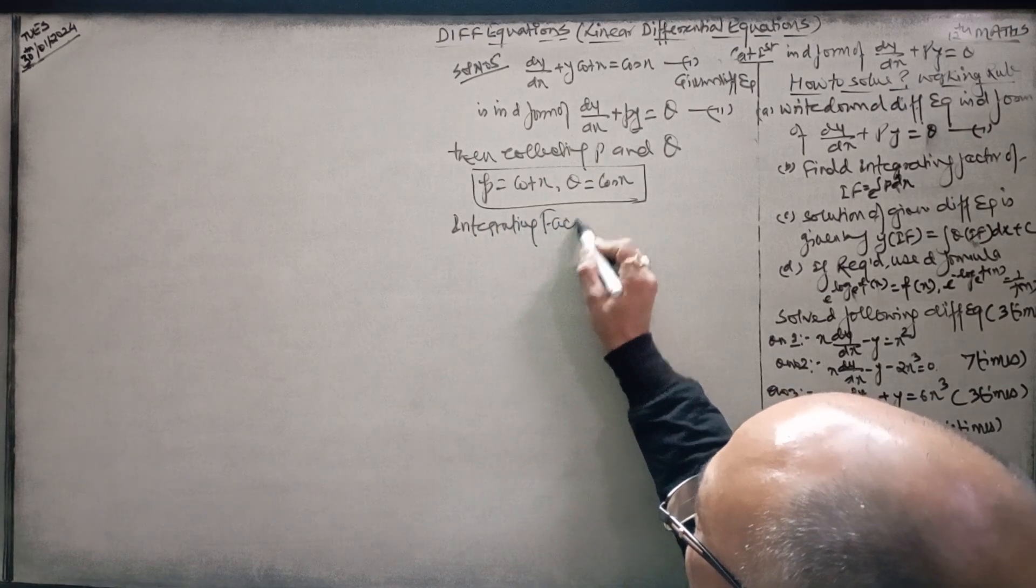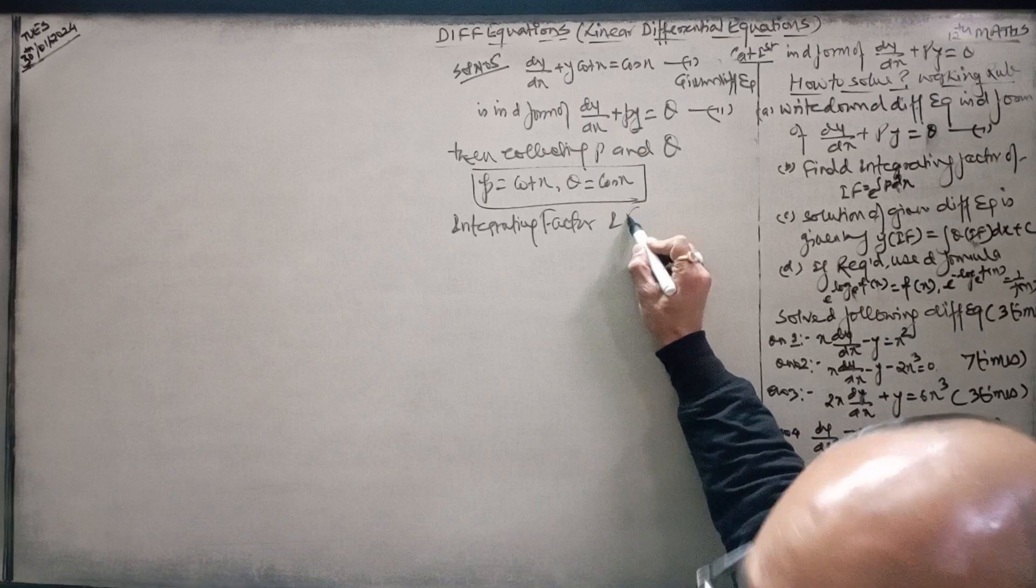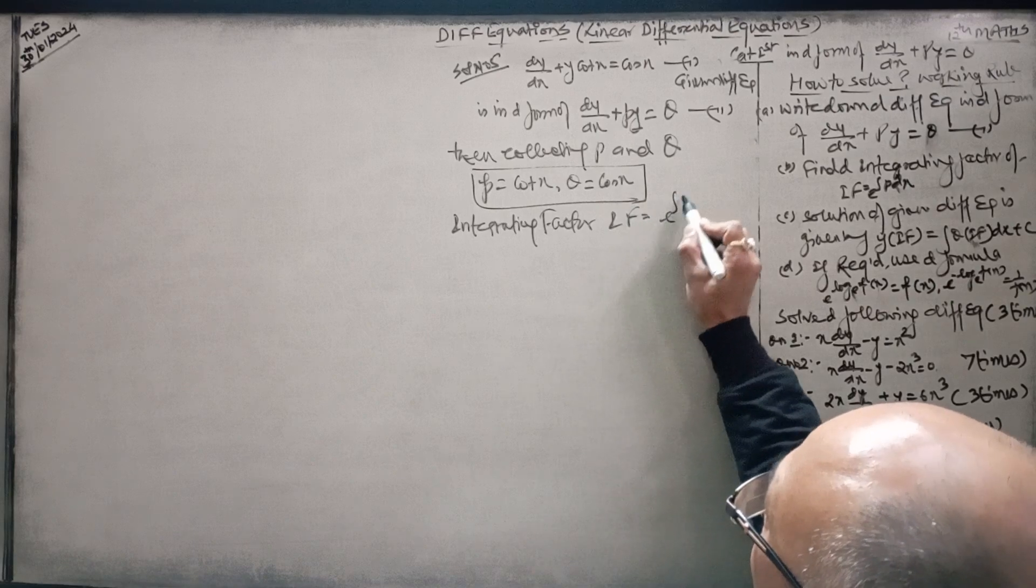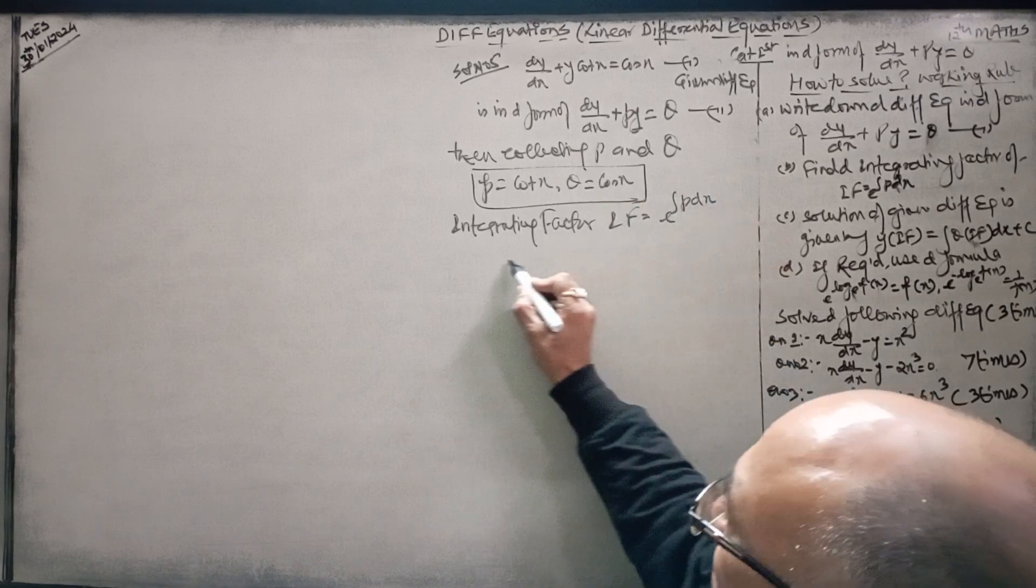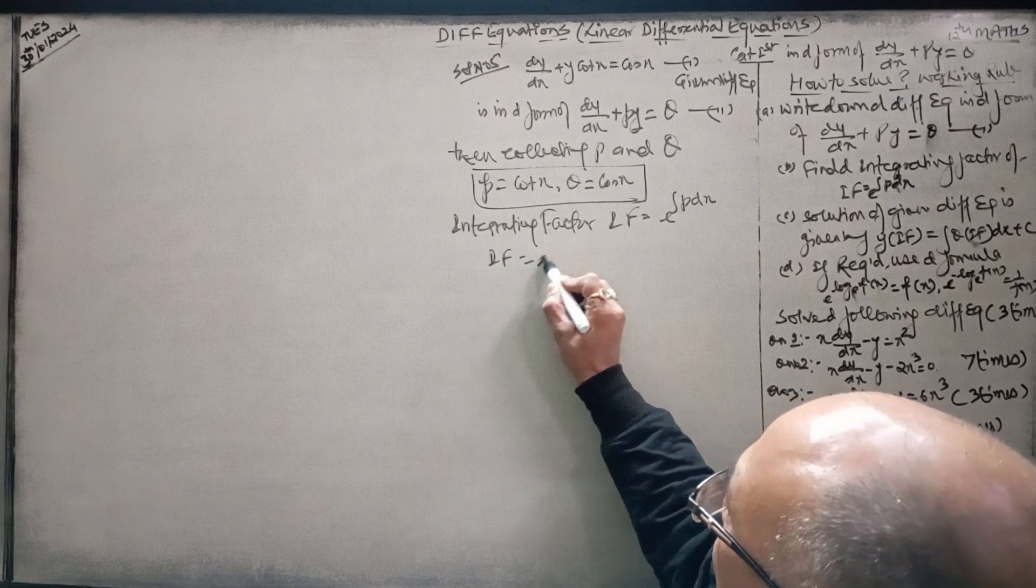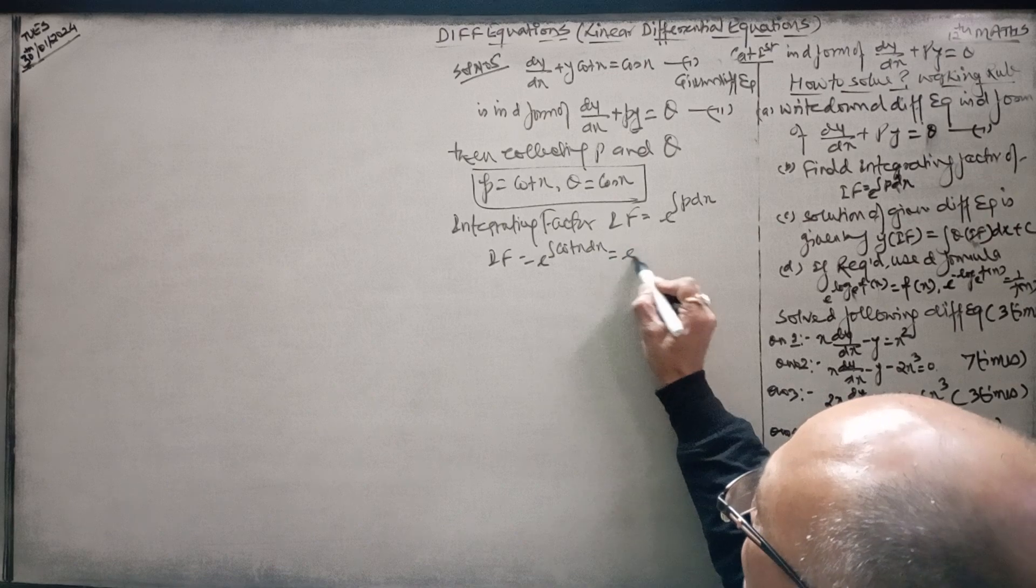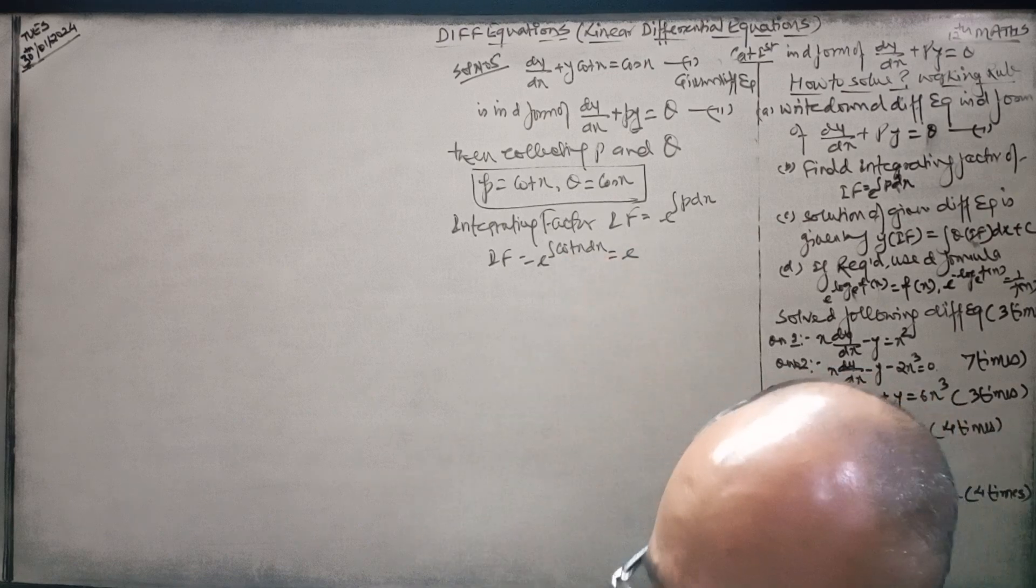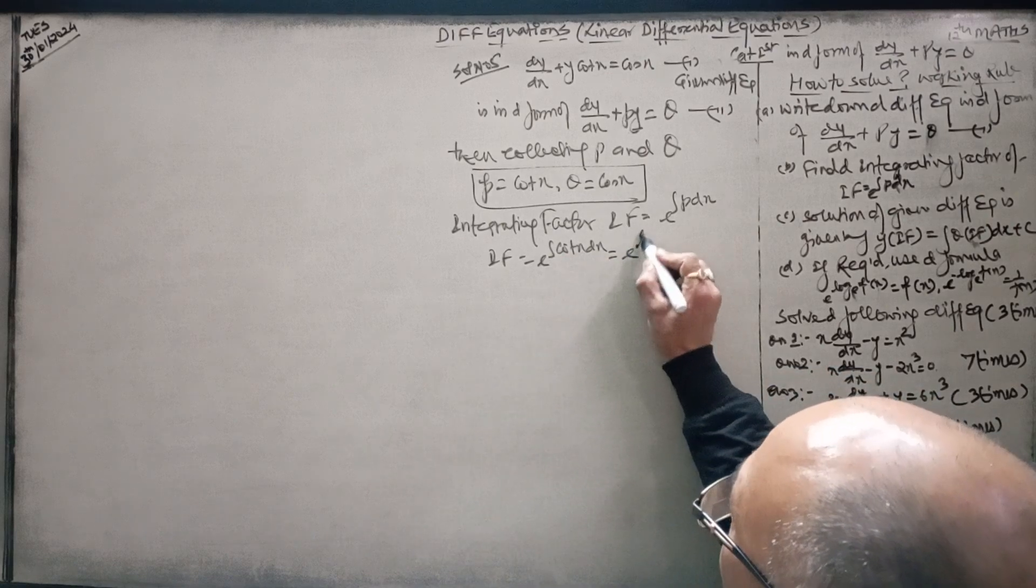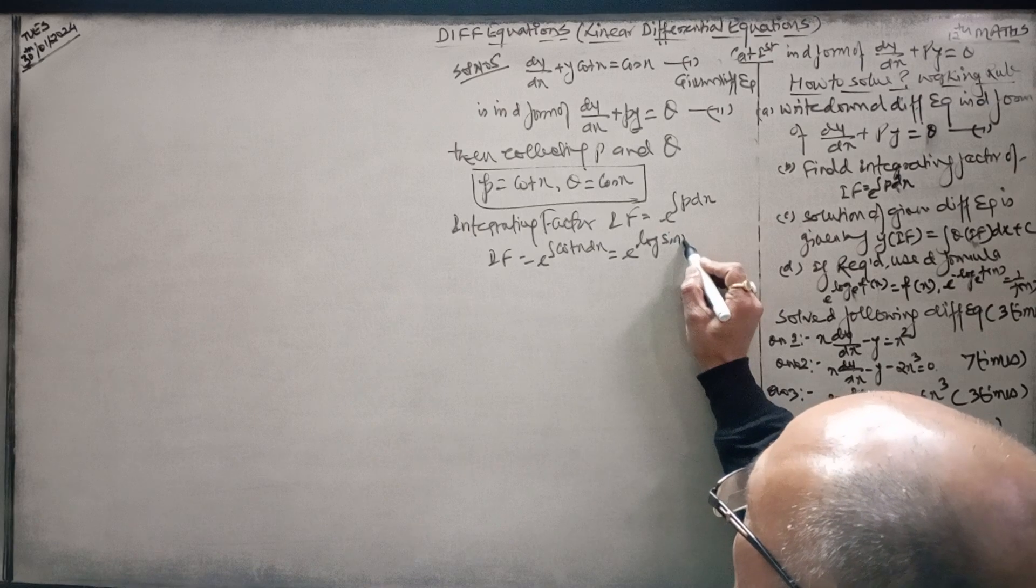Integrating factor, you have to find out. This is IF equal to e to the power integral of p dx. Integrating factor is equal to e to the power, P is cot x. This is equal to e to the power log sin x.